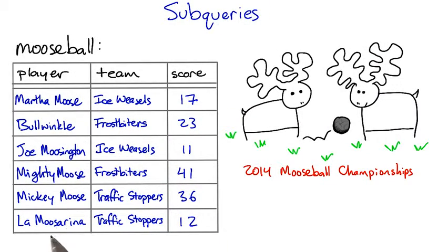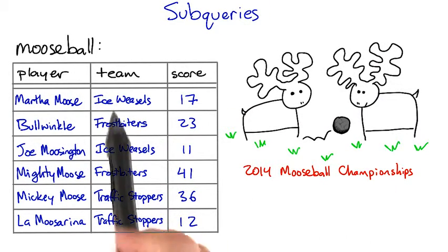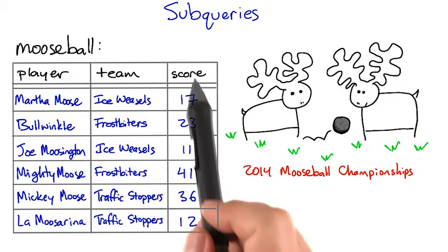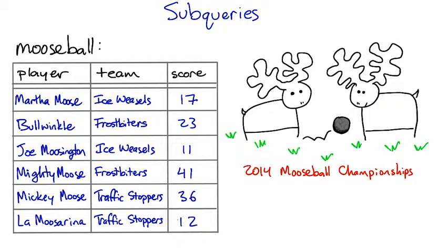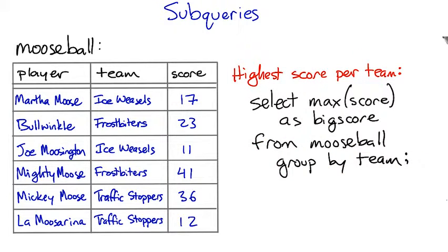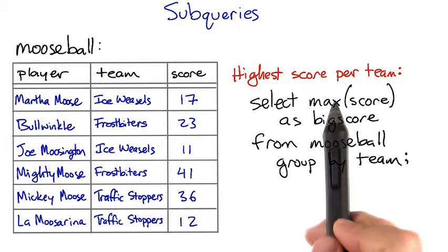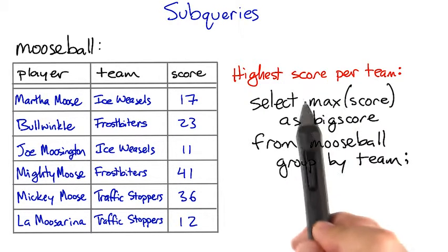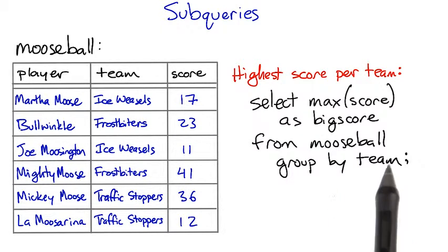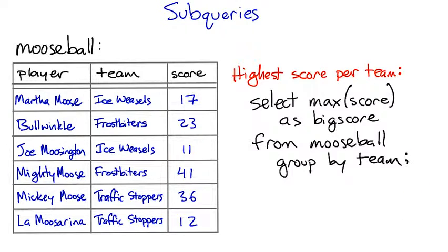Here's a table that lists mooseball players, what team they're on, and the number of points they scored in the last season. And here's a query that will find the highest scoring player's score for each team. This uses the max aggregation, grouping by team, to find the highest score.